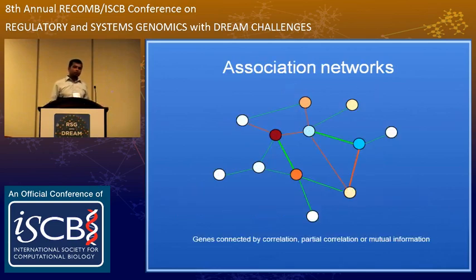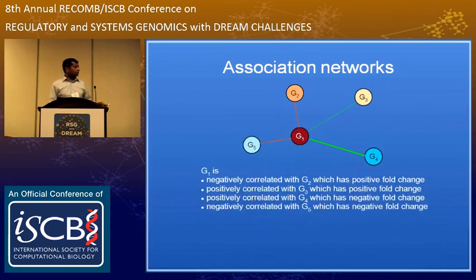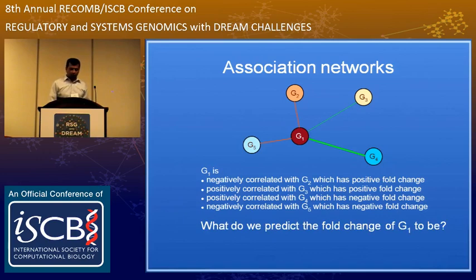This is not something you can do with the usual association arrays where you create a network using correlation, partial correlation, or mutual information — because if I have some kind of association between G1 and its neighboring genes, it still does not tell me how to predict the expression of G1 given the fold changes in G2, G3, G4, G5. So we don't have a model to predict the fold change of G1 given the neighboring genes' fold changes.